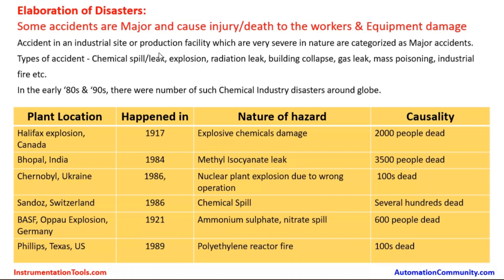Some accidents are major and cause injury, death, or significant equipment damage. Accidents at industrial sites that are very severe in nature are categorized as major accidents. Types include chemical spill or leak, explosion, radiation leak, building collapse, gas leak, mass poisoning, and industrial fire.